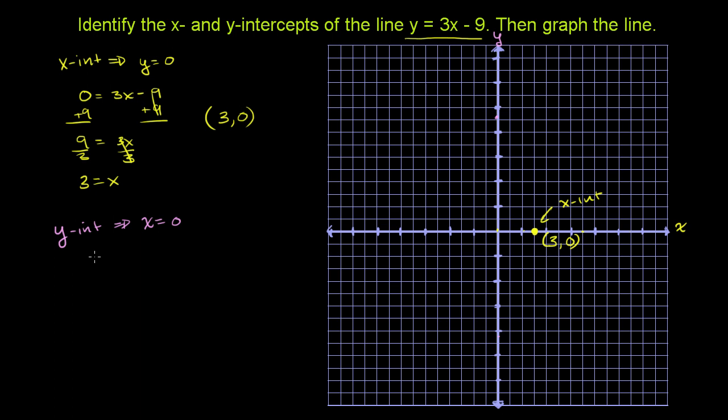So y is equal to 3 times x is 0 now. 3 times 0 minus 9. Well, 3 times 0 is just 0. So 0 minus 9, well, that's just equal to negative 9. So we have the point 0 comma negative 9.